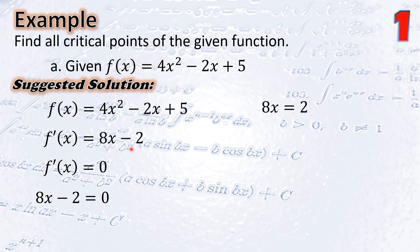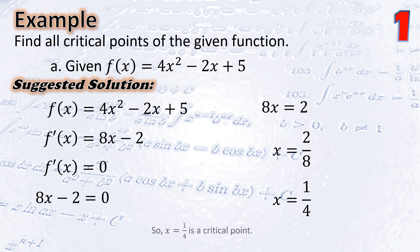From 8x − 2 = 0, we get 8x = 2. Dividing both sides by 8, x = 2/8, which simplifies to x = 1/4. Hence, x = 1/4 is the critical point, or critical number.